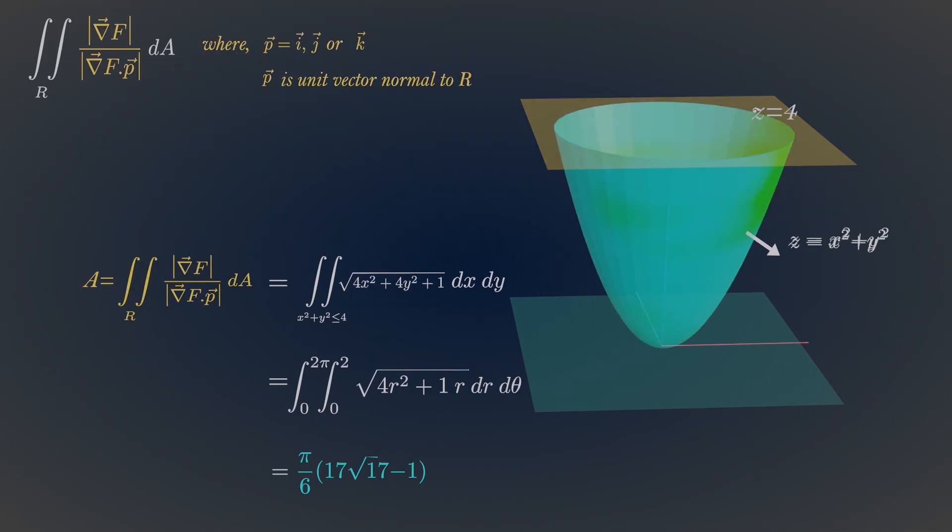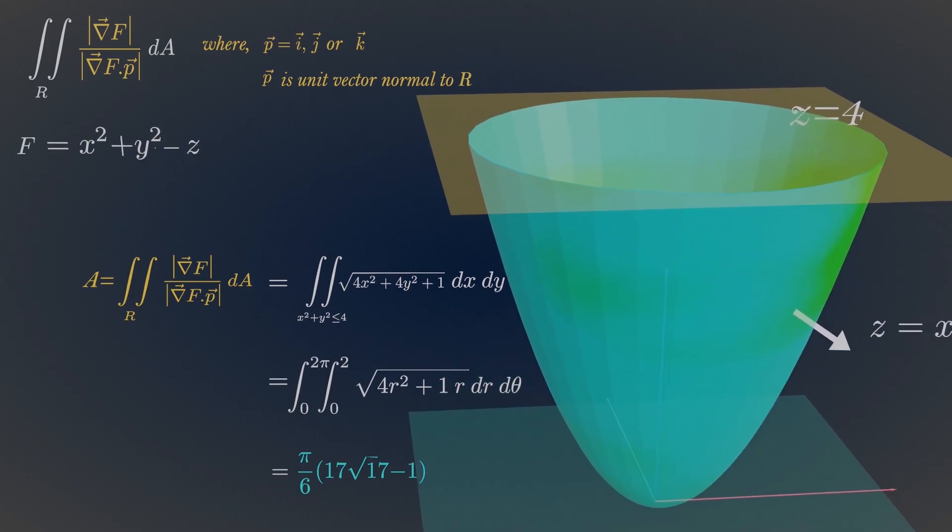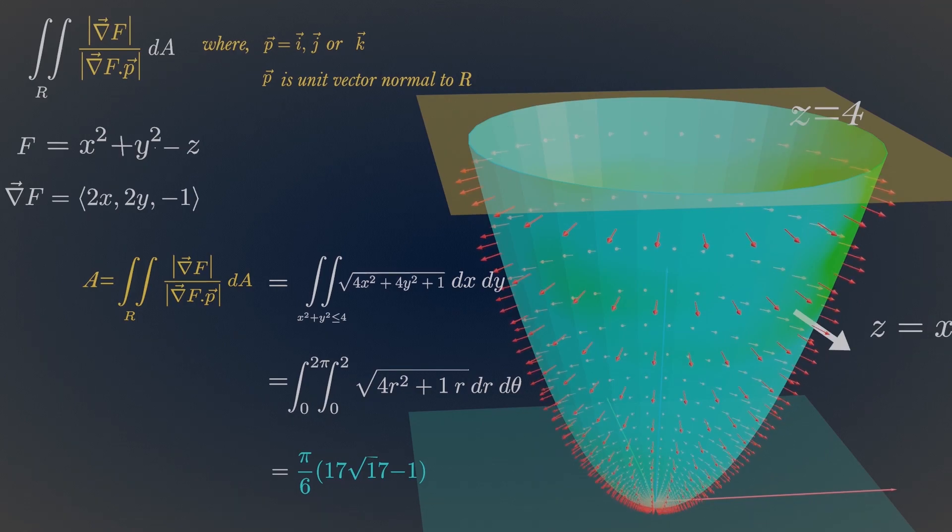First, convert this explicit function to implicit function. Now compute its gradient. Therefore, the magnitude of gradient is...